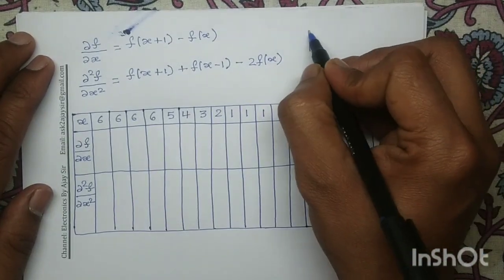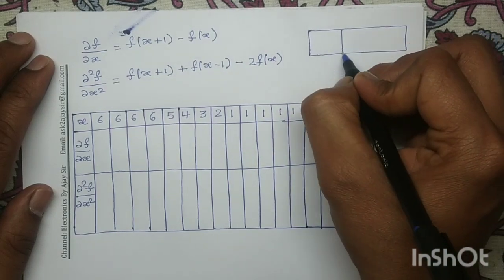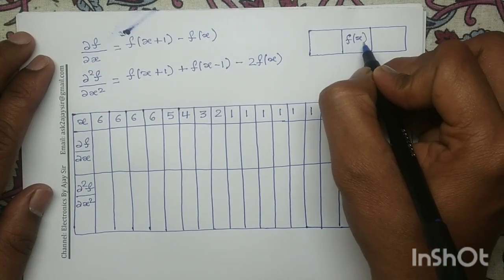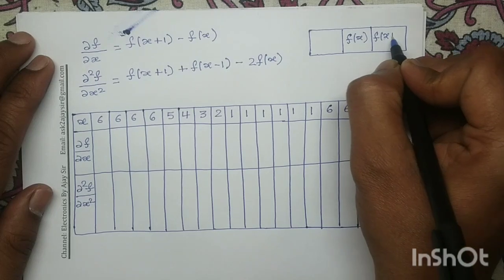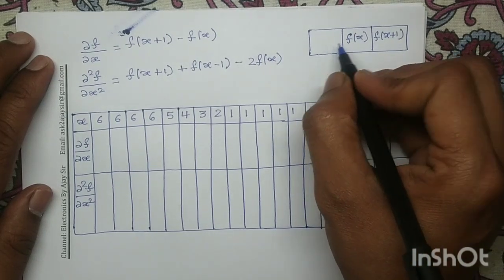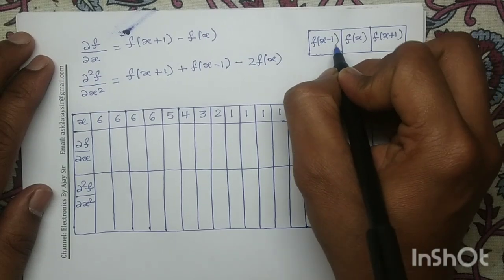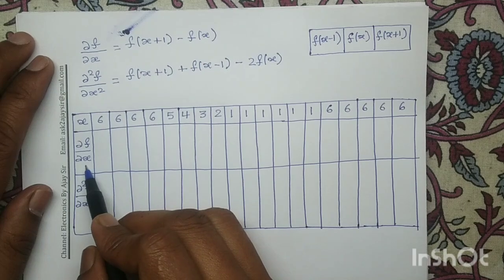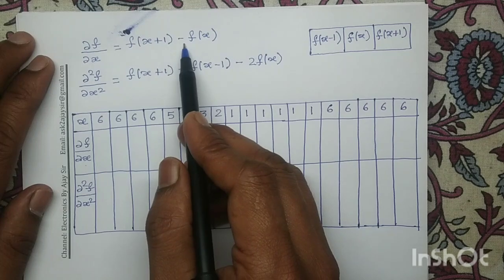In the given input strip, if we consider this element as f(x), then the next element is f(x+1) and the previous element is f(x-1). So first we will compute the first order derivative, del f/del x, whose equation is f(x+1) minus f(x).